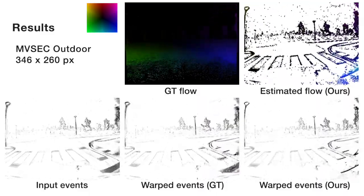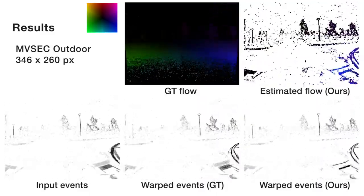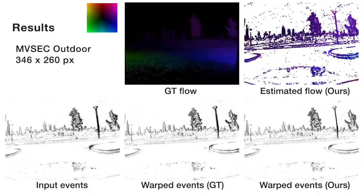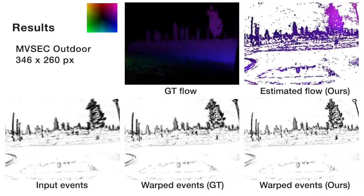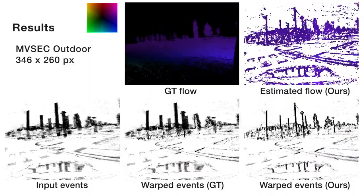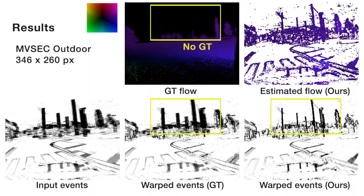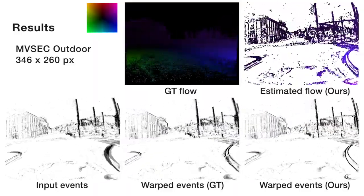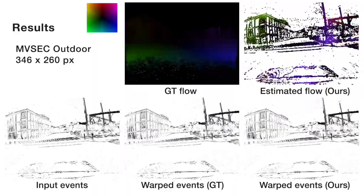These are other results on the MVSEC outdoor sequence. Driving scene data has even more sparse ground truth pixels than indoor sequences. Again, our method estimates flow for such pixels and produces sharp-edge structure.